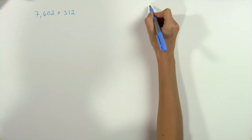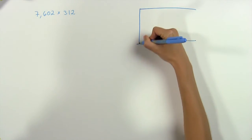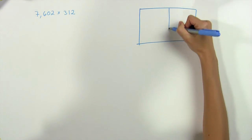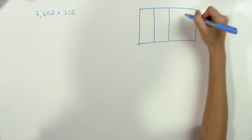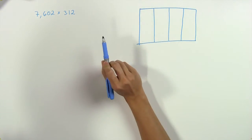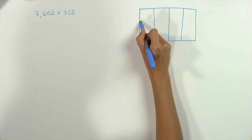The first thing we want to do is set up a grid, which has as many columns as there are digits in our first number. That would be four digits, so we want to have four columns. Next we give it as many rows as there are digits in the second number, which here is three, so it'll have three rows.